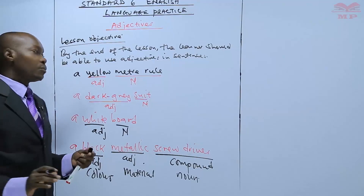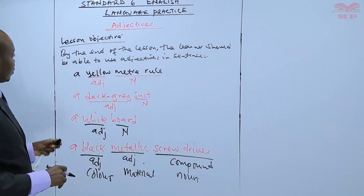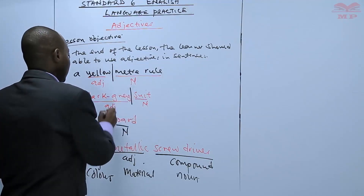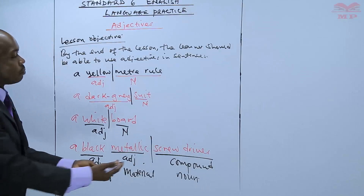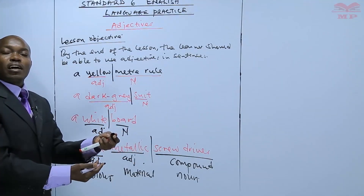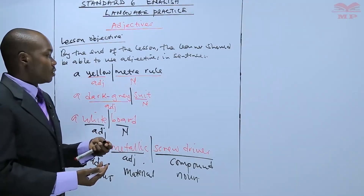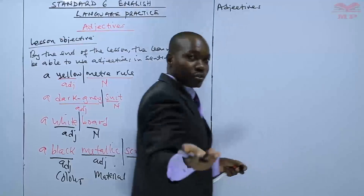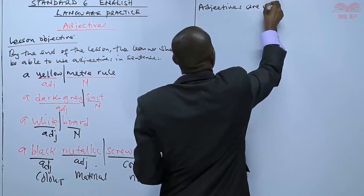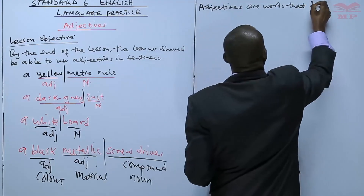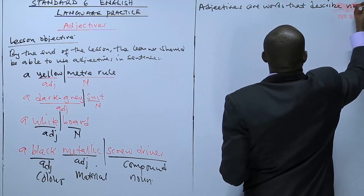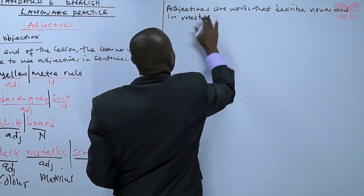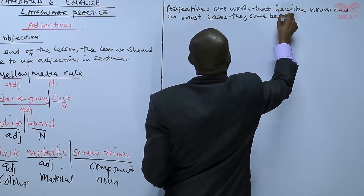Now you can see the position of adjectives in these four sentences — they have come before the noun. So most adjectives come before the noun. You can write this down and take some short notes: adjectives are words that describe nouns, and in most cases they come before the noun.